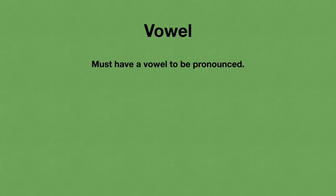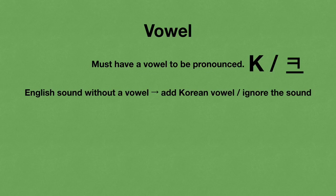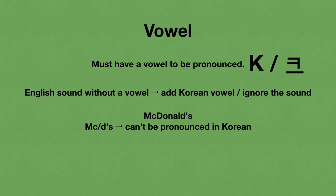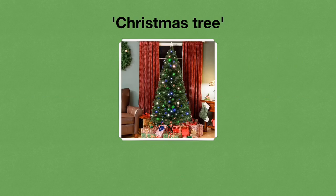This is also related to the second reason: vowels. In Korean, you must have a vowel to pronounce something. For example, the letter K can be pronounced in English, but the Korean consonant 키역 can't be pronounced on its own. That's why we add the vowel U and pronounce it like 크. So for English syllables without a vowel, like K, we add a Korean vowel or ignore the sound entirely. For McDonald's: 맥 and 드 are not full syllables, so for 맥 we add 에 and pronounce it as 맥, and for the Dz sound we just drop the S and pronounce it as 드. This is why McDonald's in Korean is 맥도날드.